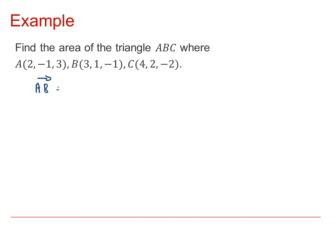So we need first of all to calculate two vectors for the sides. So the vector from A to B would be the vector for B minus the vector for A and that is 1, 2, negative 4 and AC similarly would be the vector for C minus the vector for A which is 2, 3, negative 5.